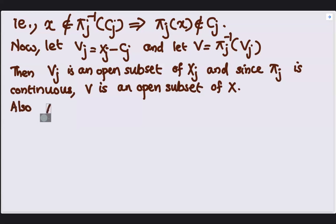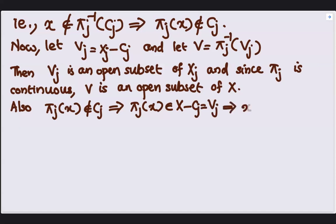Also, we have pi_J of x does not belong to C_J, which implies that pi_J of x belongs to its complement, that is X minus C_J, which we labeled as V_J, and this will imply that x is a member of pi_J inverse of V_J, which is our set V.